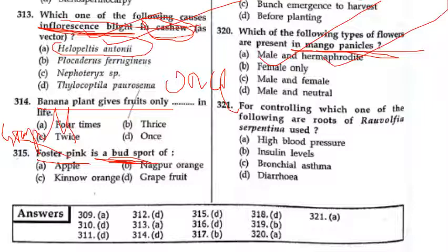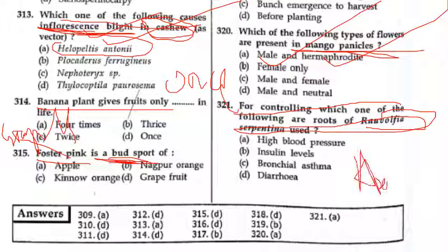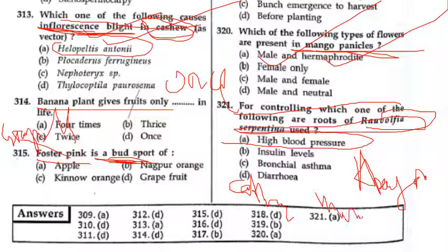For controlling which disease — Rauwolfia serpentina होता है, Sarpagandha. इसका family होता है Apocynaceae. जो important चीज है इसको याद रखें — Serpentine alkaloid होता है, और यह blood pressure को control करता है. बहुत important चीज है. और याद रखें, Catharanthus roseus, जिसमें Vinblastine और Vincristine होता है — यह भी Apocynaceae family से belong करता है.